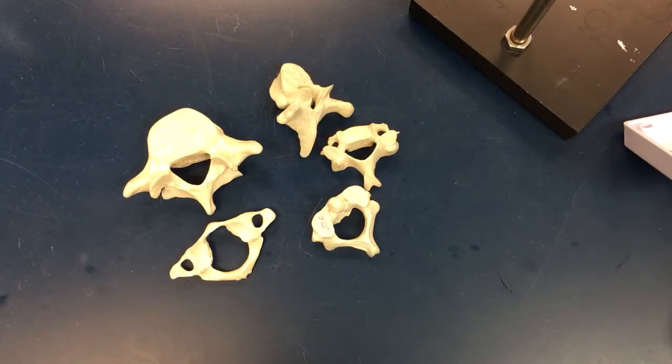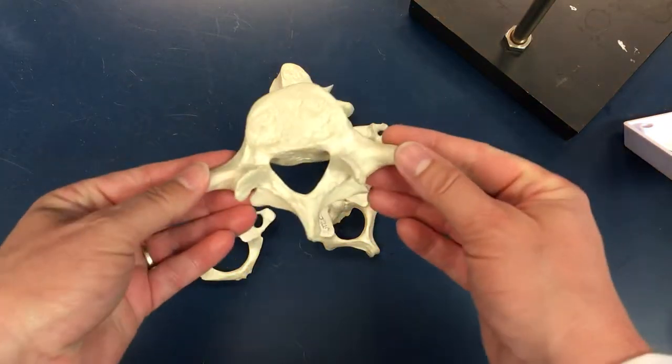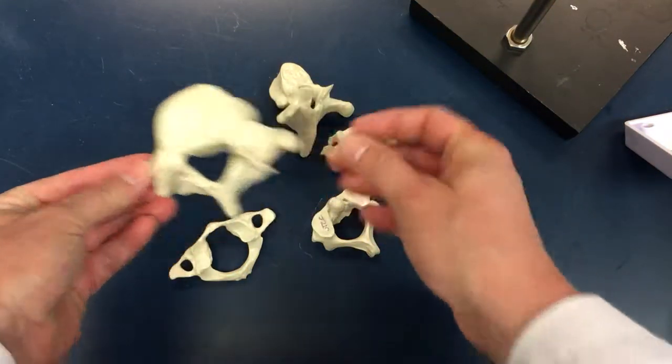In this video we're going to go over the different types of vertebrae found in our spinal column. So this big one is a lumbar.